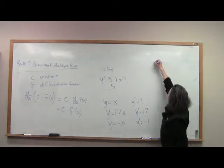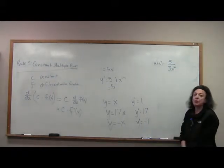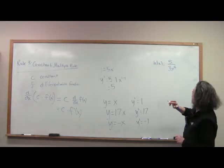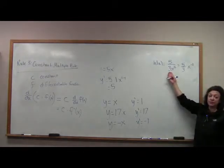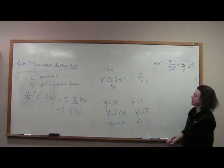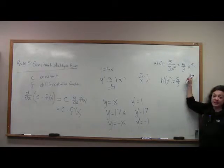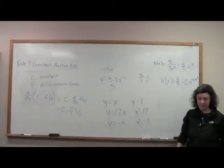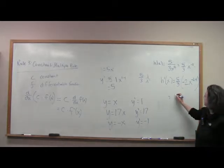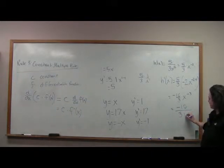What is the derivative of 5 over 3x squared? Bring the x up to the numerator so we can take the derivative, writing it as 5-thirds times x to the negative second power — leaving the 3 in the denominator since this is equivalent to 5-thirds times 1 over x squared. Rewrite your constant 5-thirds, and take the derivative of x to the negative second. Bring your exponent down in front and subtract one: 5-thirds times negative 2 is negative 10-thirds, giving negative 10-thirds x to the negative third, or negative 10 over 3x cubed.